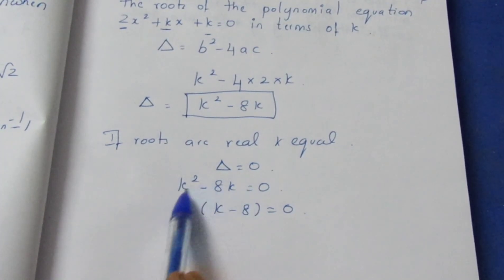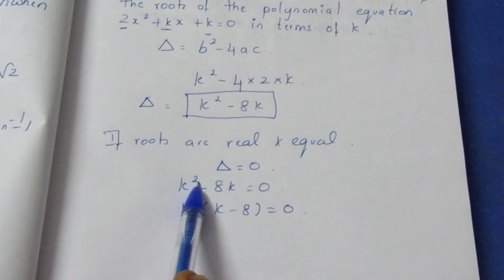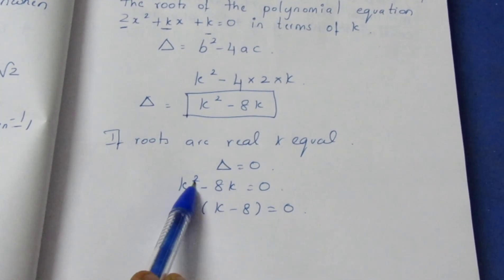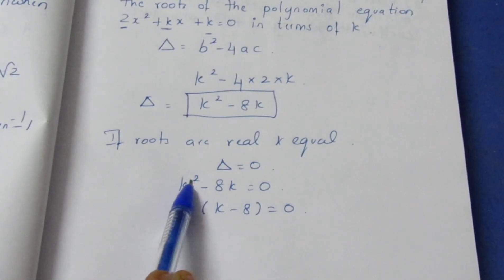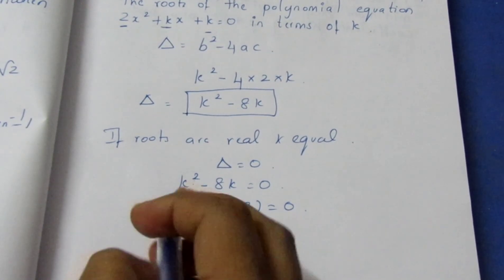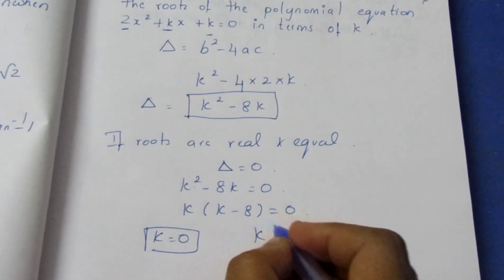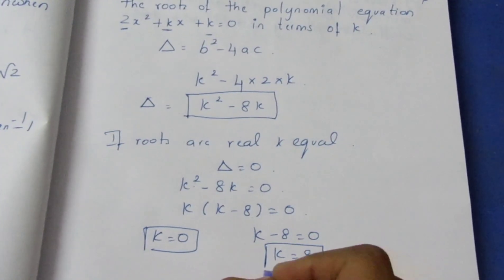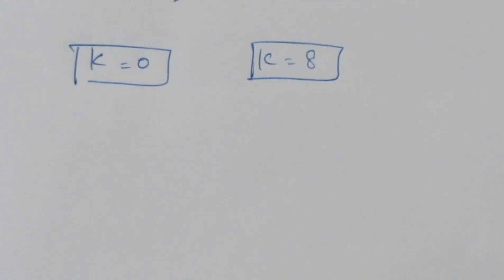So k² minus 8k equals 0. Factoring out k, we get k(k minus 8) = 0. Setting each factor to zero: k equals 0, or k minus 8 equals 0, giving k equals 8. So the values are k equal to 0 and k equal to 8.